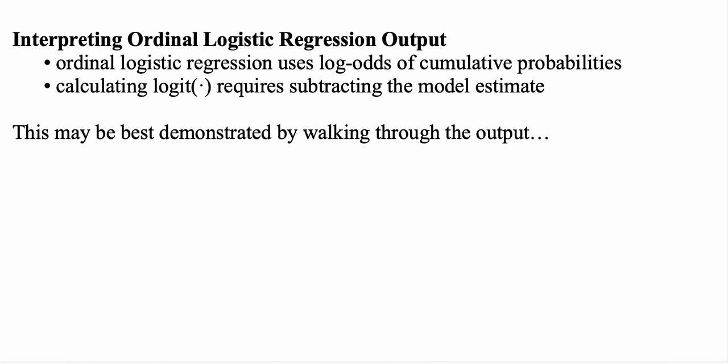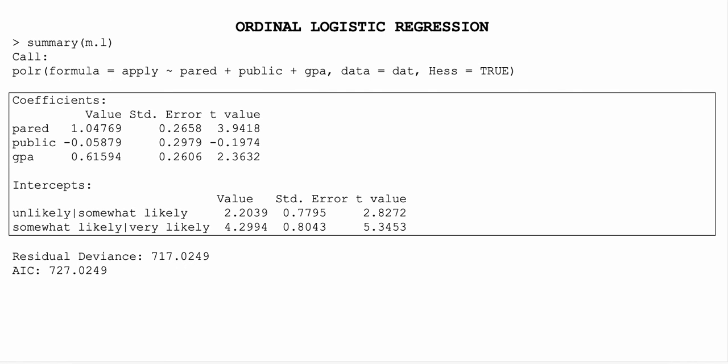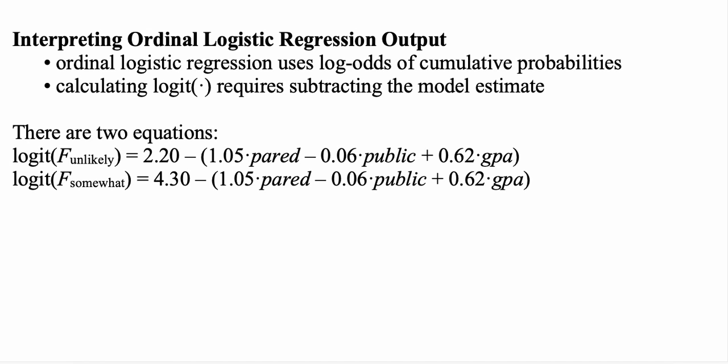Here is the output for the ordinal logistic regression in R. It looks similar to the probit output but the coefficients and intercepts are interpreted differently. We use the coefficients to build the model estimate and use the intercepts as the actual intercepts for the cumulative probability equations. The first equation gives the logit for the cumulative probability of being at most unlikely, and the second gives the logit for being at most somewhat likely. The model estimate is subtracted from the respective intercepts.